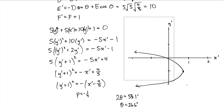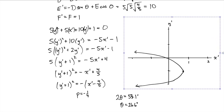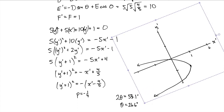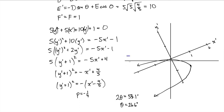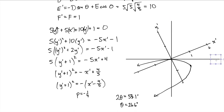I rotate the sketch by approximately 26.6 degrees and draw the standard XY coordinate system with the same origin. The X prime axis is rotated about 26.6 degrees from the X axis. The parabola, now rotated, opens toward the bottom left in the XY plane. This rotated parabola is the final graph of the given conic equation.